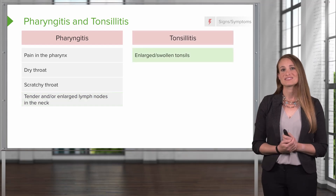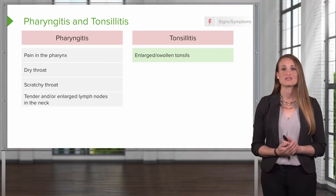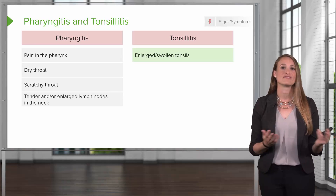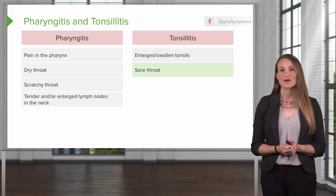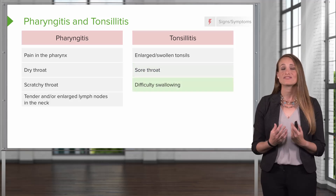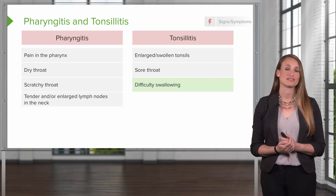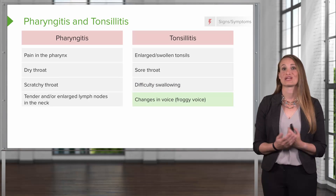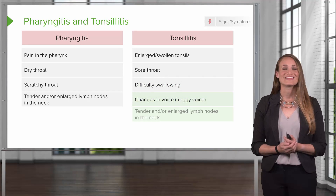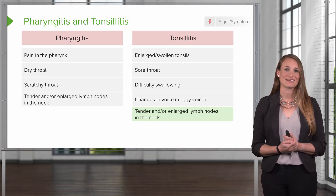When a patient has tonsillitis, they're going to have enlarged, swollen tonsils — remember, "itis" means inflammation of the tonsils. They may have a sore throat and difficulty swallowing, and this can be a mechanical problem due to the enlarged tonsillar size. They may have changes in their voice — they may sound like Kermit the Frog. And they'll also have tender or enlarged lymph nodes in the neck.